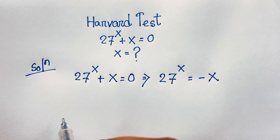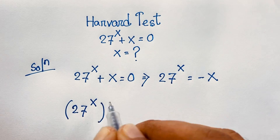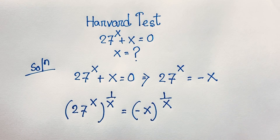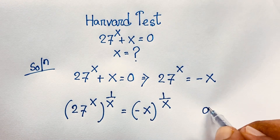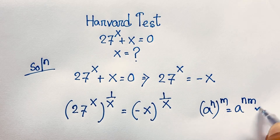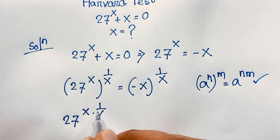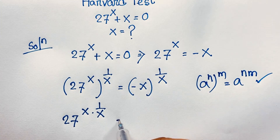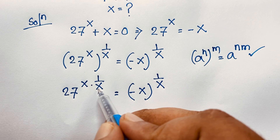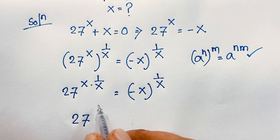Now I apply the exponent 1 over x to both sides: 27 to the power x, bracketed to the power 1 over x, is equal to negative x bracketed to the power 1 over x. Using the formula (a^n)^m = a^(n·m), the left side becomes 27 to the power x times 1 over x. The x's cancel, giving us 27 to the power 1, which equals 27.